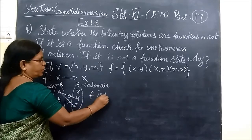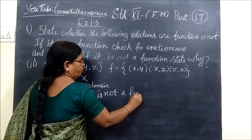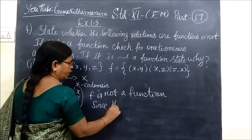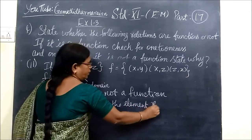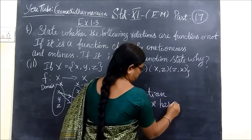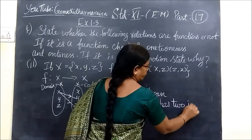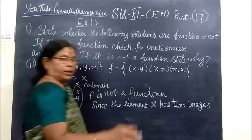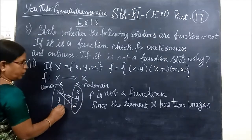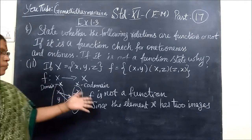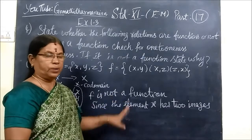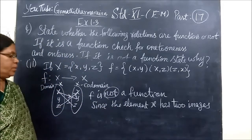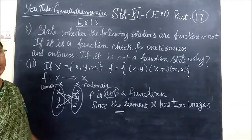Here we see that F is not a function since the element X has two images, Y and Z. There is no unique image. It is not a function because the element X has two images. So we see the following problem in the next one.